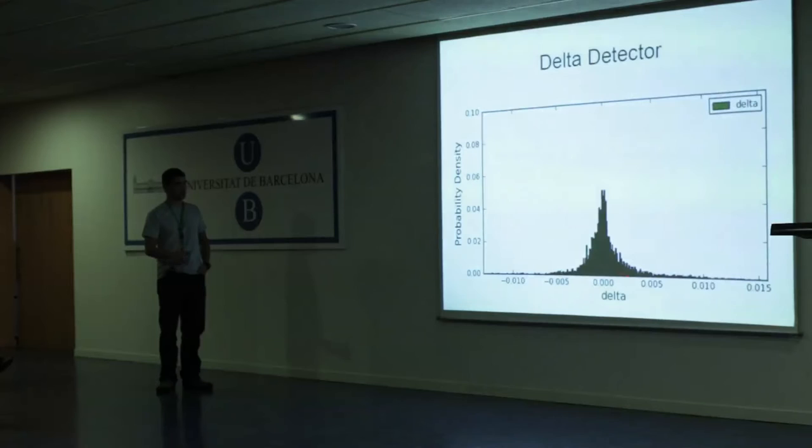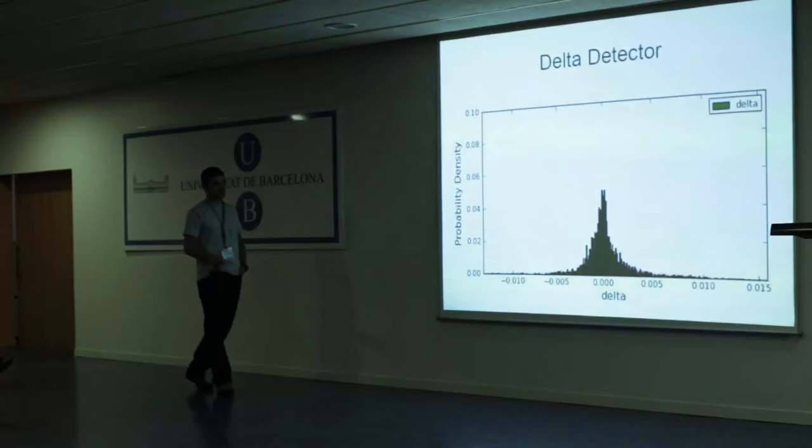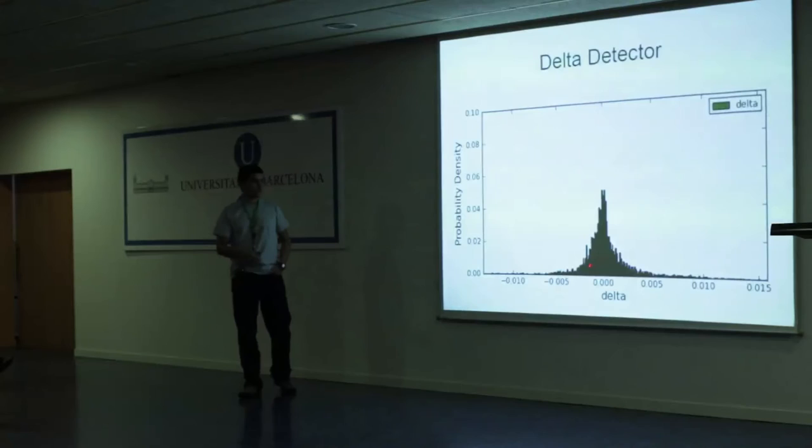You can see that the deltas are within 10 to the minus 2 precision. This interval is much smaller than the gamma distribution interval, meaning any corruption creating a delta outside this interval will be detected by the delta detector.